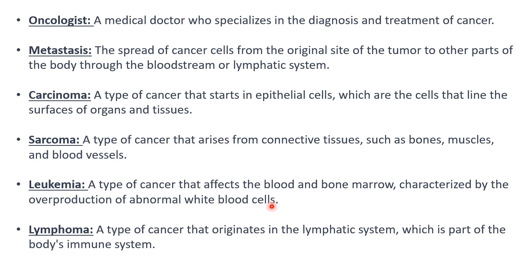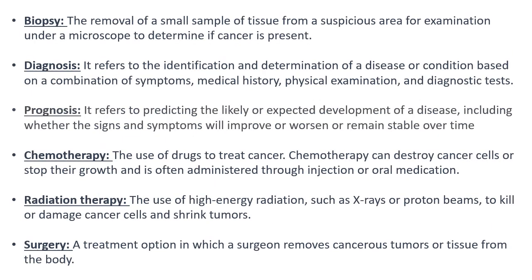Lymphoma is a type of cancer that originates in the lymphatic system, which is part of the body's immune system. To summarize: lymphoma is lymphatic system cancer; leukemia is blood and bone marrow related; sarcoma involves connective tissues such as bones, muscles, and blood vessels; and carcinoma is cancer of the epithelial cells that line our organs.